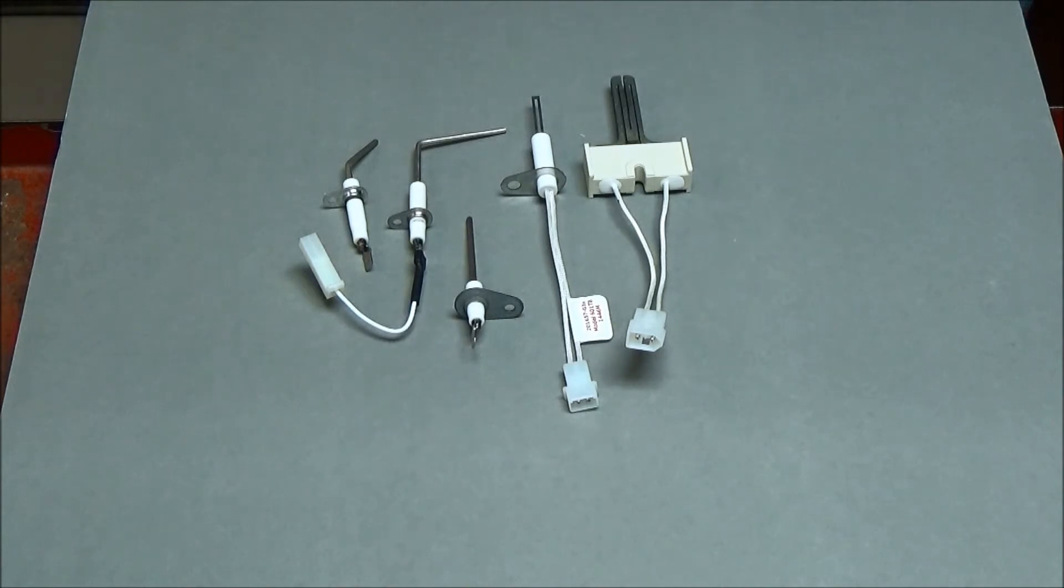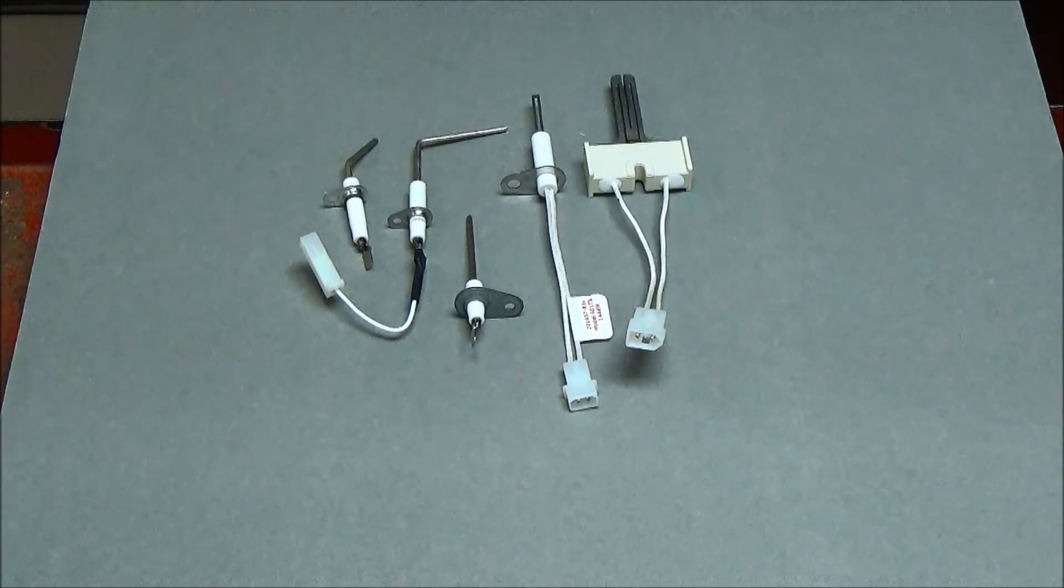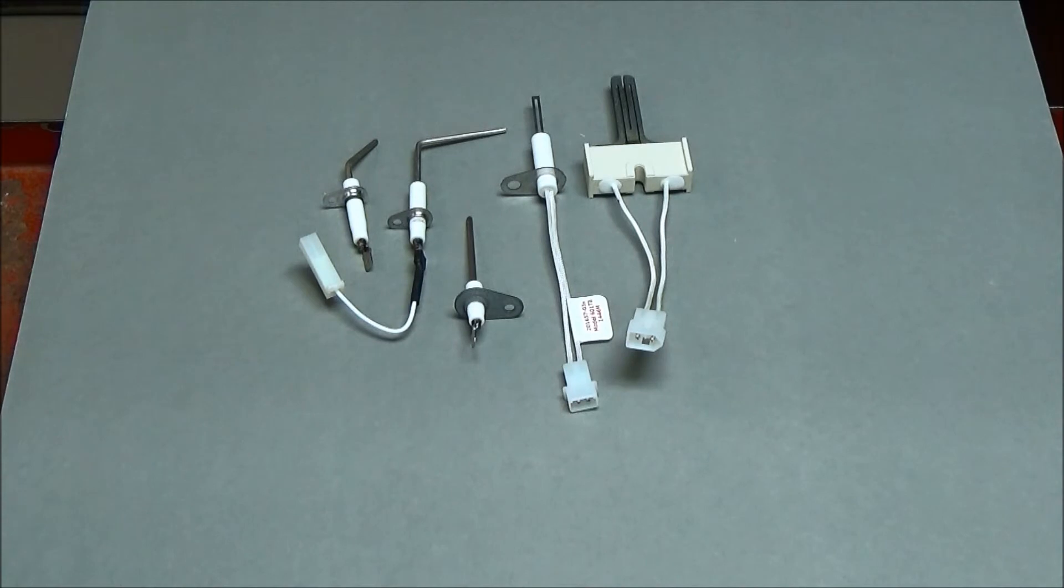On a call from the thermostat, the draft inducer will start. There's a draft inducer pressure switch that proves to the main circuit board that the draft inducer is running. This starts a cycle called a purge cycle.